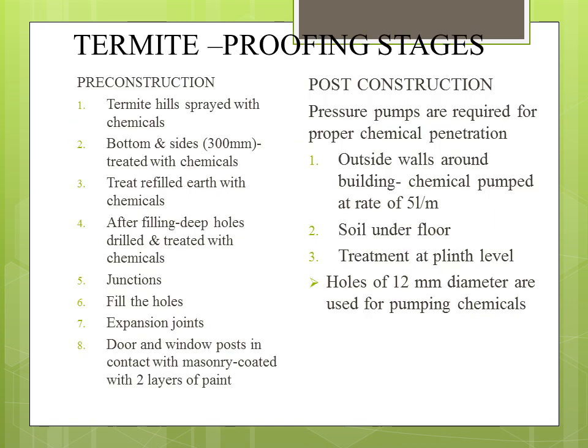Termite treatment can be conducted in pre-construction and post-construction stages. In the pre-construction stage: termite hills are sprayed with chemicals; the bottom and sides up to a depth of 300 mm are treated with chemicals; earth is filled and treated; deep holes are filled and treated; junctions are sprayed; expansion joints are treated; and door and window posts in contact with masonry are coated with two layers of paint. In the post-construction stage, pressure pumps are required for proper chemical penetration, carried out in three stages: outside walls around the building are pumped with chemicals at 5 litres per metre; soil under the floor is treated; and treatment is done at plinth level using holes of 12 mm diameter.